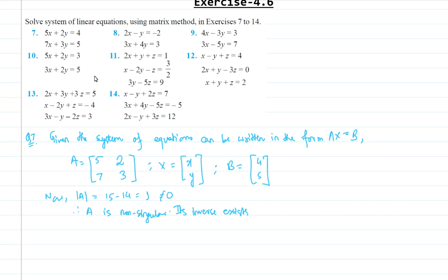Since the inverse exists, we need to find A inverse. A inverse is equal to 1 over determinant of A times the adjoint of A. Since determinant of A equals 1, the inverse is simply equal to the adjoint of A, which is [3, -2; -7, 5].